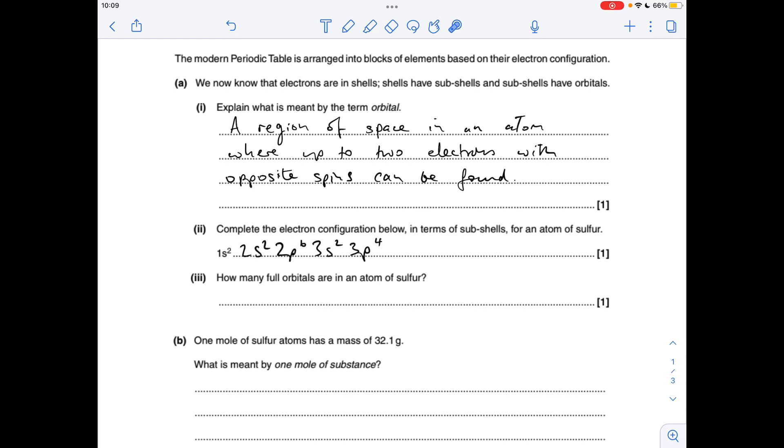Electron configuration for an atom of sulfur in terms of subshells, so obviously they've started us off at 1s2 and then that's the rest.